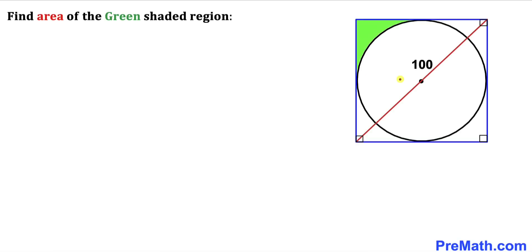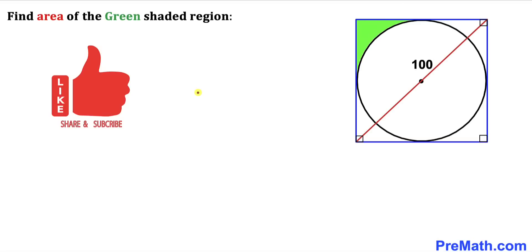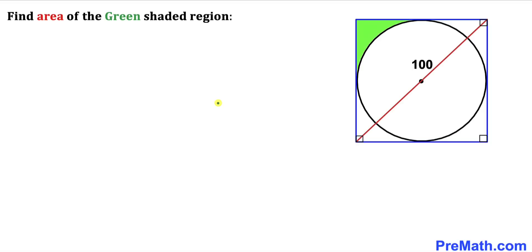Welcome to pre-math. In this video we have a circle inscribed in a square, such that the diagonal of this square is 100 units, and now we are going to calculate the area of the green shaded region on the left hand side. Please don't forget to give a thumbs up and subscribe. Let's go ahead and get started.